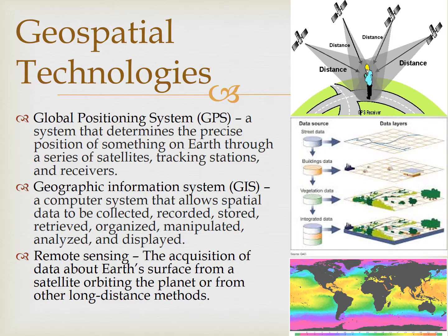Geospatial technologies encompass the modern tools used to analyze data about specific locations. There are three specific systems that you need to be familiar with, so we will examine each in detail. The Global Positioning System, or GPS, is a system that determines the precise position of something on the Earth through a series of satellites, tracking stations, and receivers.